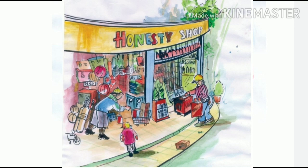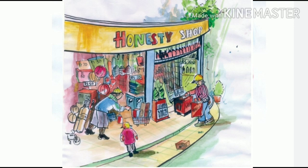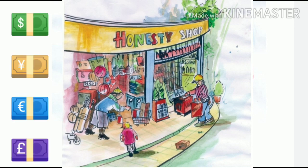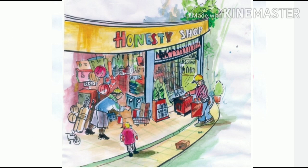How will we buy things from here? We can't see who is coming or going, whatever things they are taking. So how can we buy things from this type of place? Lots of people are coming, children are coming and taking their needed things. One child is there — children will come and take something and go. So how will the shopkeeper get back the money? How will he get the money correctly if children are coming and taking something and going?